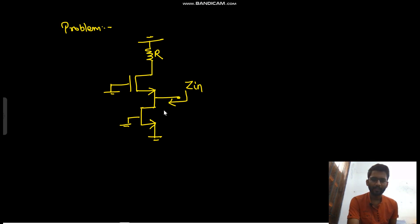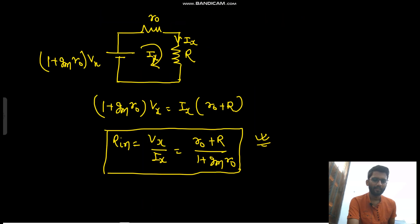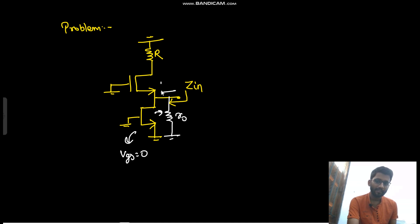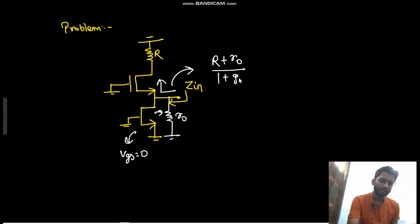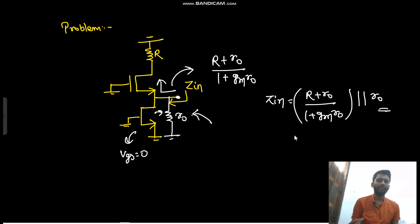Coming back to the problem circuit: after short-circuiting the DC bias sources, for the top MOSFET Vgs = 0 so it is replaced simply by R_naught. For the bottom stage we use the formula: R = (R + R_naught) / (1 + gm·R_naught). So Z_in = [(R + R_naught) / (1 + gm·R_naught)] in parallel with R_naught.